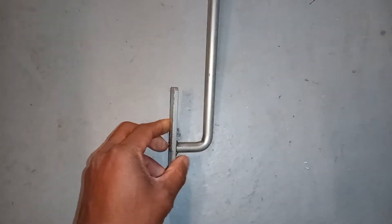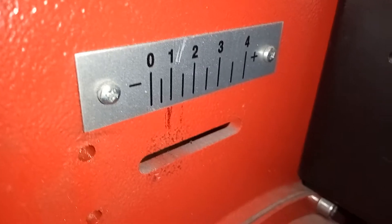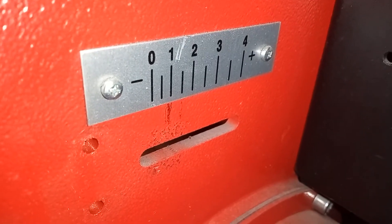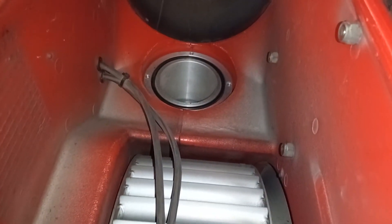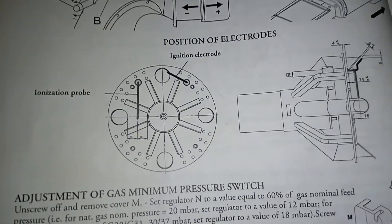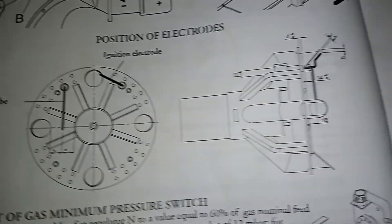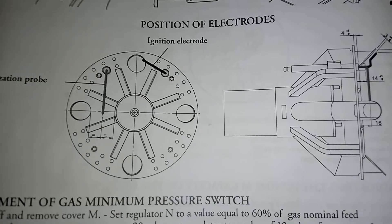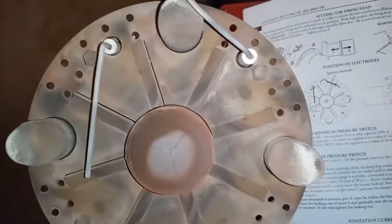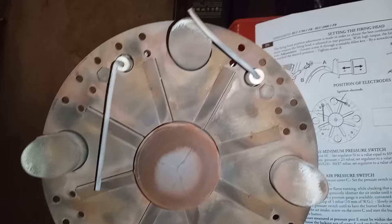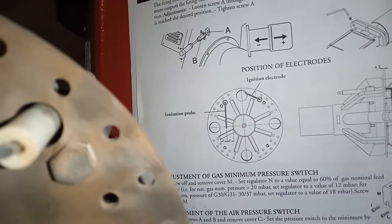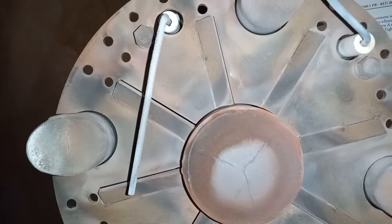So here we have it. That had to be removed in order to remove the burner. The position of the electrodes — so here we have it here, and in real life. Ignition electrode, ionization probe.